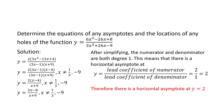Now that we know where our vertical asymptote and hole are, let's find any horizontal or oblique asymptote. After simplifying, we still had degree 1 over degree 1, so x's remain in the denominator. Since the degrees are equal, we have a horizontal asymptote. The y-value equals the lead coefficient of the numerator over the lead coefficient of the denominator. Looking at the simplified expression, the lead coefficient of the numerator is 2 and the lead coefficient of the denominator is 1, so 2 over 1 equals 2 — there's a horizontal asymptote at y equals 2.